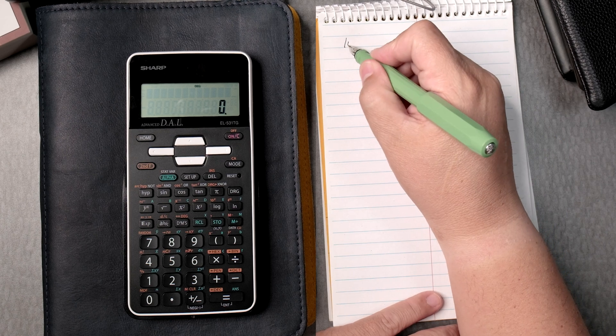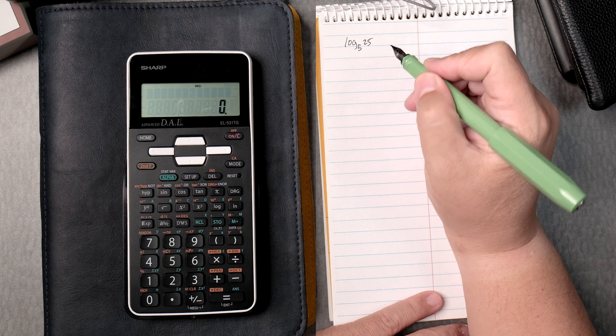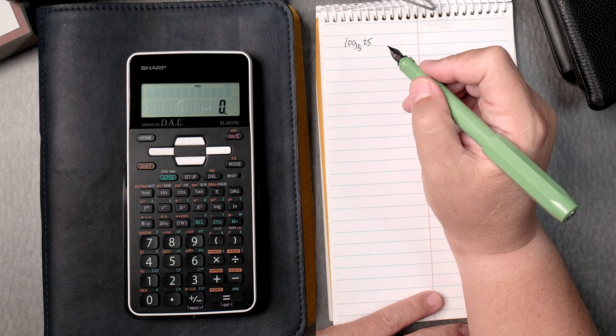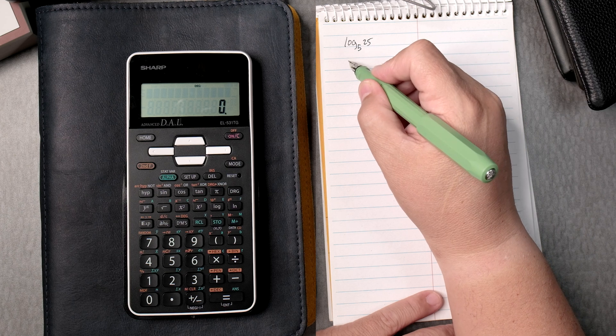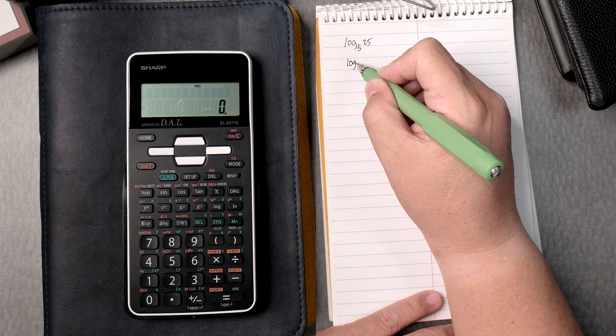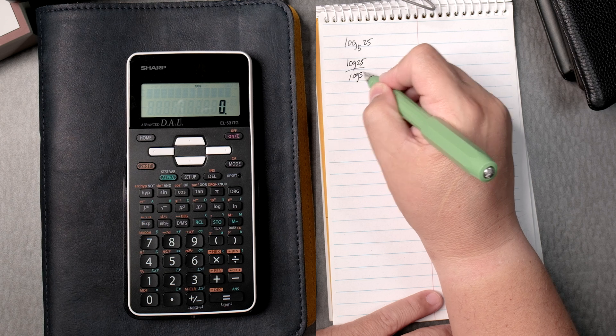So if we take the log of base 5, 25, one way we can do this particular problem is that there's a rule that says you can do this, the log of 25 over the log of 5.